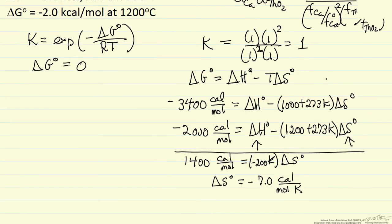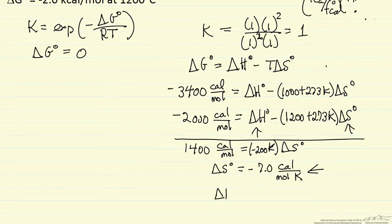So I have a value for delta S. I took the first equation, subtracted it from the second equation, delta H disappeared. I can now substitute into either one of these equations this delta S value, and if I do that, I can calculate delta H. A couple things - exothermic reaction.